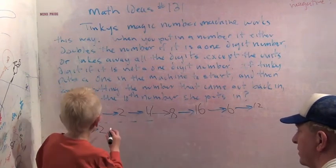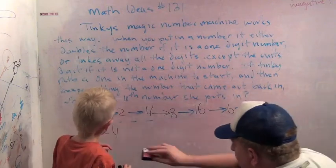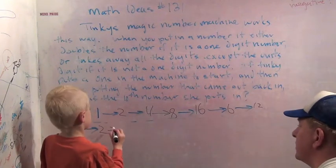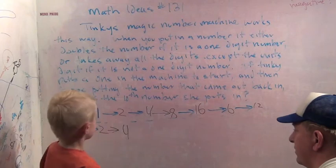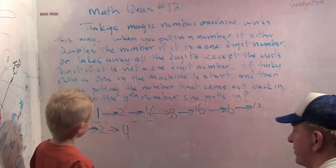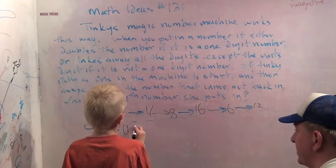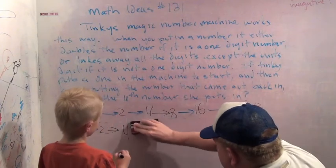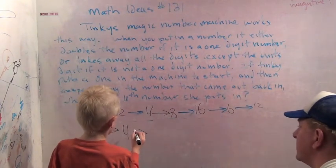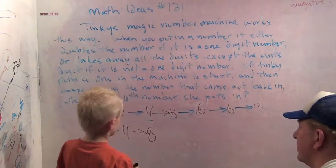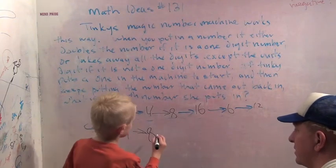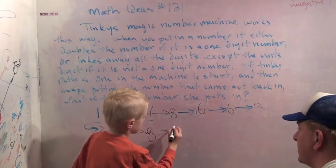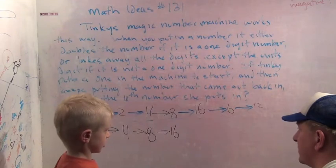That turns into a four. Make your arrow. What does the four turn into? An eight. Make your arrow. What does the eight turn into? A sixteen. That turned into a six. Very interesting.